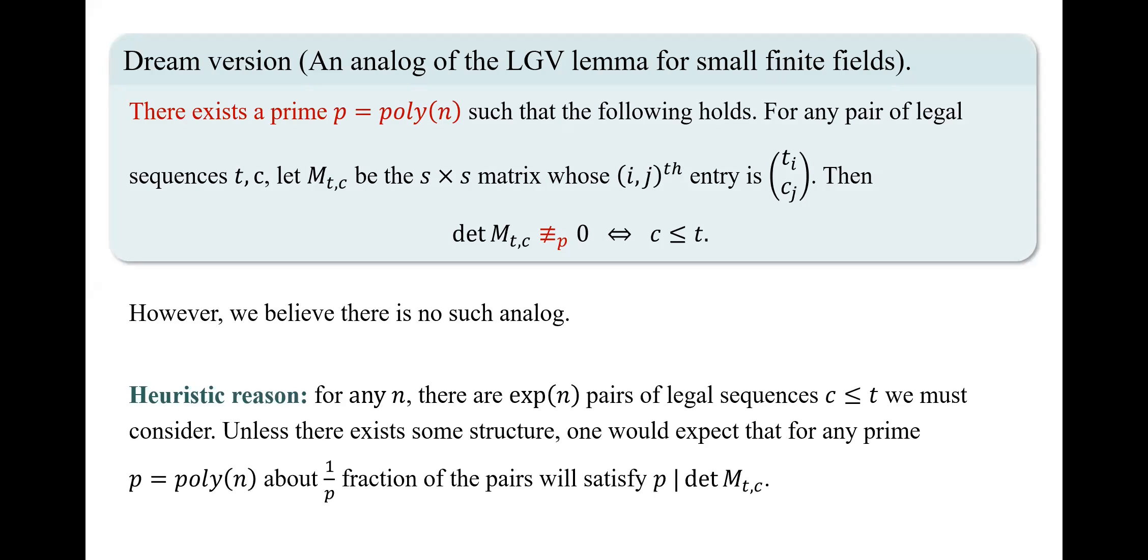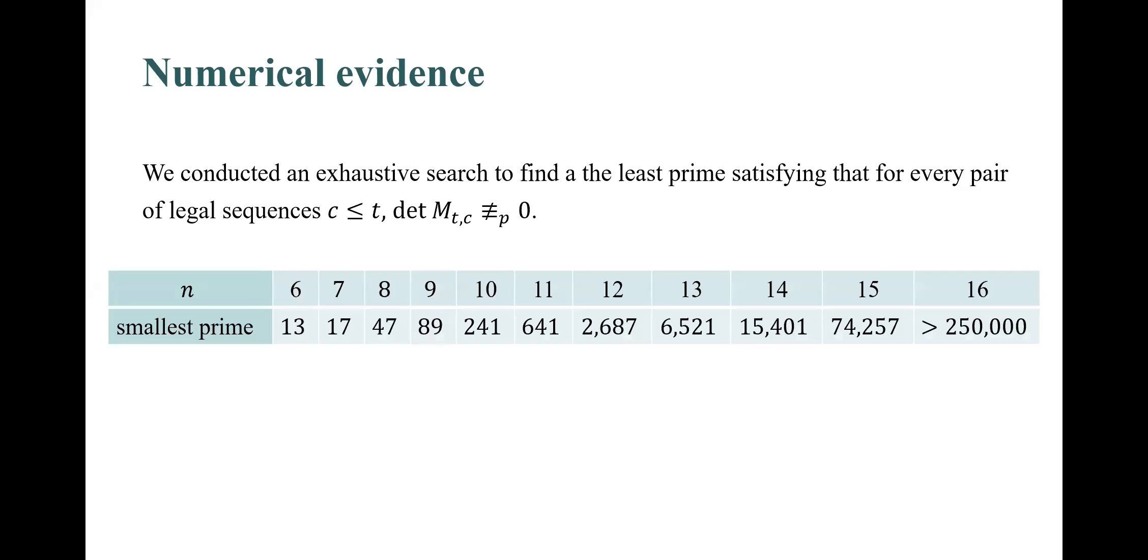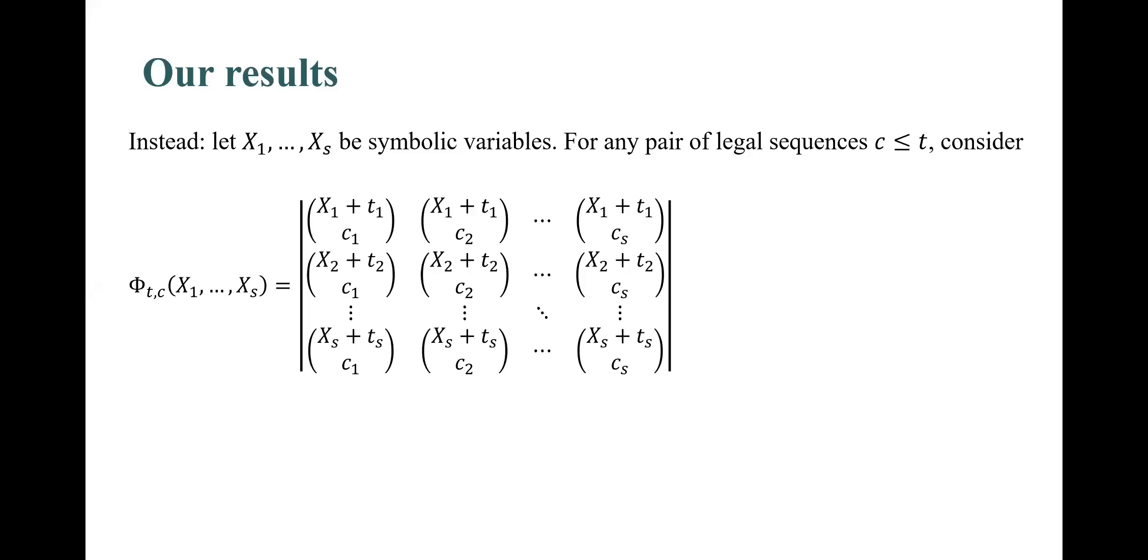One heuristic reason is that for any n, there are exponentially many pairs of legal sequences we must consider. Unless there exists some hidden structure, one would expect that for any prime p that is polynomial in n, about 1 over p fraction of the pairs will satisfy that p divides the determinant of M_t_c. In addition, we provide some numerical evidence. For any n from 6 to 16, we conducted an exhaustive search to find the least prime that satisfies the analog of the LGB lemma for small finite fields. The results are presented in the following table. One can see that this prime grows extremely fast with n, where when n has the small value of 16, the respective prime is larger than 250,000. This growth seems to be exponential, or even super exponential in n.